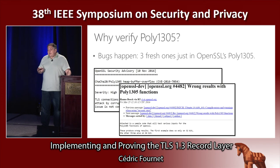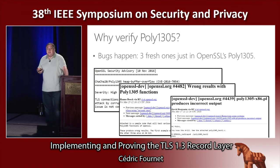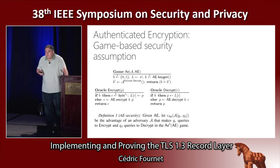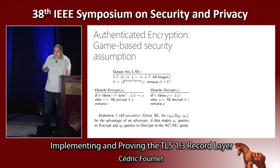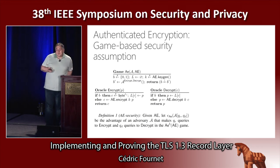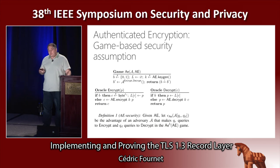Why verify this code? Well, it's possible to get it wrong. In the recent implementation in OpenSSL, there were quite a few defects, ranging from computing the wrong values to buffer overruns in the implementation. We don't do only safety and functional correctness — we also look at security properties. For that, we adopt a standard computational model of cryptography, where we write games to express both our assumptions and what we prove about the functionalities we implement.